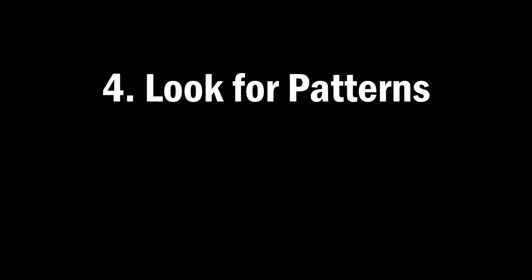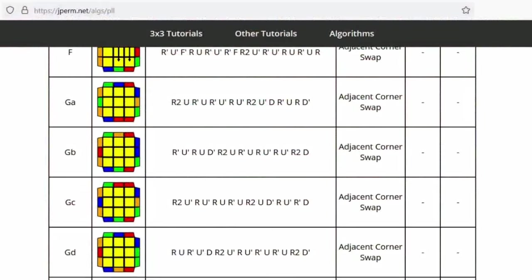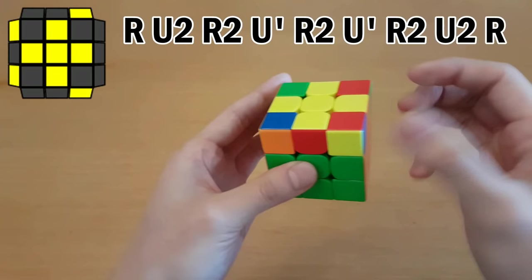Number four, look for patterns when memorizing algorithms. Algorithms can be very long and memorizing all that information many times over can be very difficult without some memory shortcuts. One technique is looking for hand movement patterns. How I memorize this algorithm is I start by moving the right side up, turn the top twice.